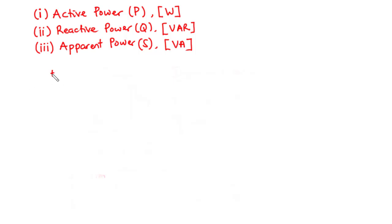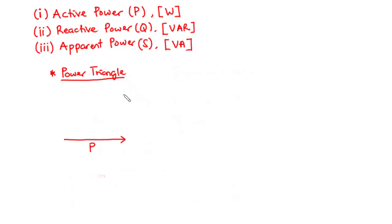Considering the power triangle, we have the active power along the horizontal axis, the reactive power along the vertical axis, and the resultant is the apparent power. We have phi as the phase angle between the apparent power and the active power. This phi is also the phase angle between the current and the voltage, and also the phase angle between the impedance and the resistance, considering the impedance triangle.